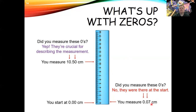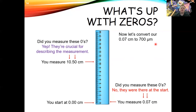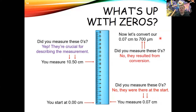If you convert 0.07 centimeters to micrometers, you get 700 micrometers. Did you measure those trailing zeros in 700? Absolutely not — they came as a result of the mathematical conversion. We defined how many micrometers are in a centimeter and did the math; it's not based on a measurement. So those zeros, because we didn't measure them, are not significant.